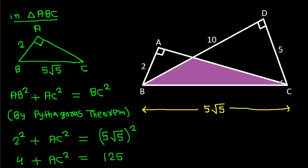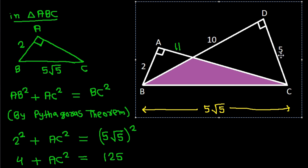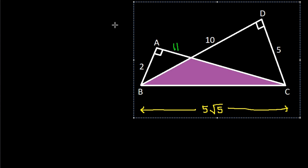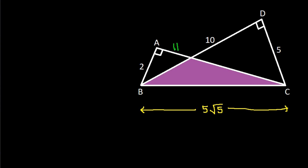We get AC is 11. Now suppose this point is P, and from point P we make a perpendicular on BC. Suppose this point is Q, so PQ is perpendicular to BC — this is our construction.